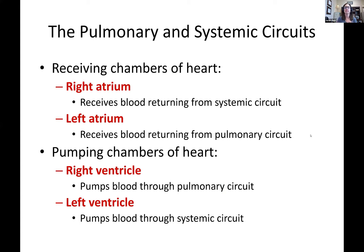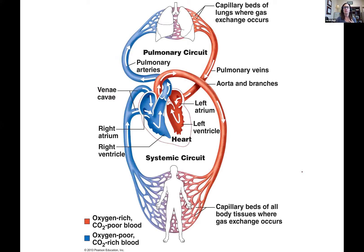The receiving chambers are the atria; the pumping chambers are the ventricles. This is a textbook image showing the same thing I drew, just much prettier. We can see the heart, the lungs above, and the human body below. It shows the pulmonary circuit up above and the systemic circuit down below.